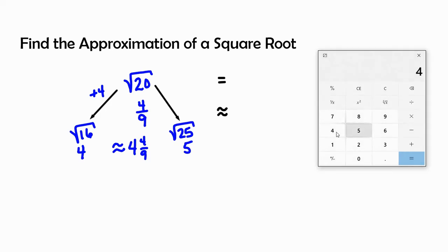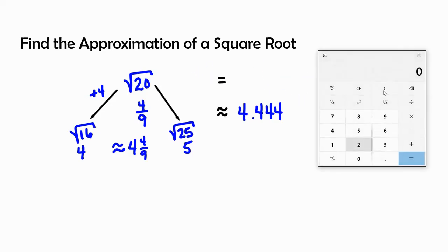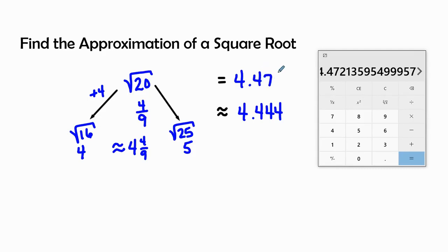Let's find out what 4 ninths is. 4 divided by 9 equals 0.4 repeating, so we're going to have 4.444 — it's essentially 4 with a repeating bar. Now let's see what the square root of 20 exactly equals on the calculator: 4.472. Not bad — it's about 28 thousandths difference. Pretty close: 4.44 and 4.47.